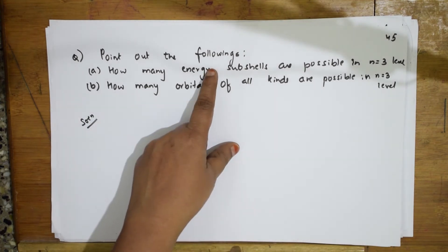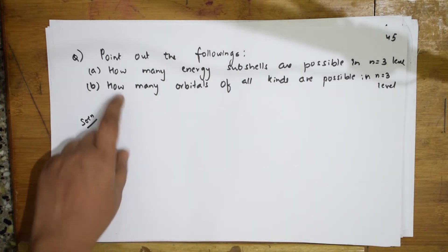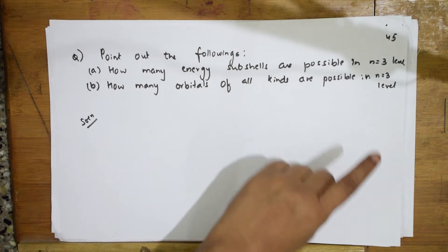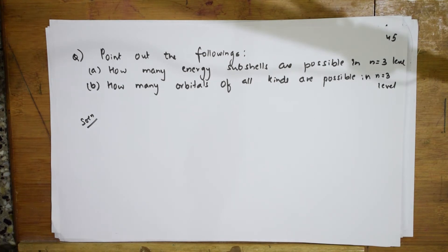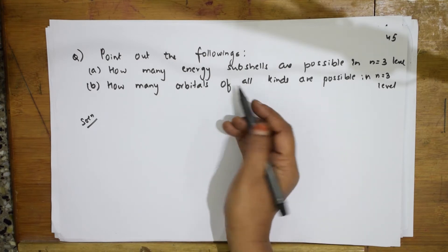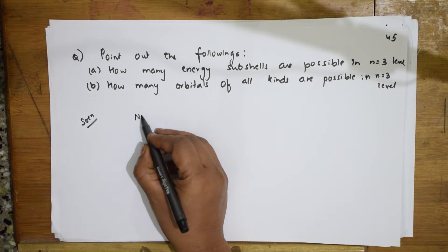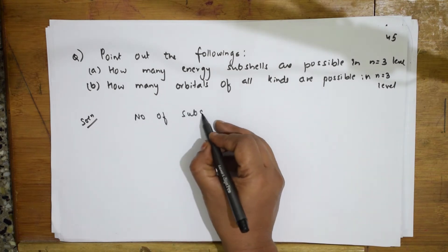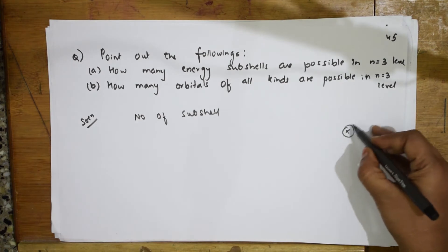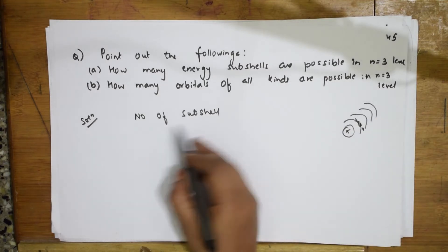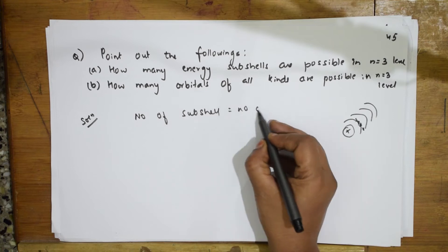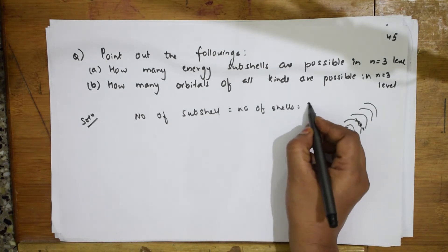Point out the following: how many energy subshells are possible in n=3? Number of subshells in a shell equals the number of shells. If I take an atom, we have K shell, L shell, M shell, and N shell as main shells, and SPDF as subshells. So number of subshells equals n, which is equal to 3.